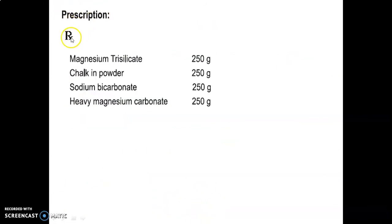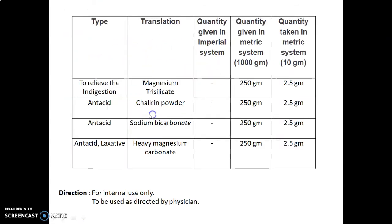The factor is calculated as quantity required divided by quantity given, equal to 10 divided by 1000, which equals 0.01. This is the prescription denoted by the symbol Rx. The formula table includes: type/category/role of ingredient, translation (name of ingredient), quantity given in metric system for preparing 1000 grams, and quantity taken in metric system to prepare 10 grams.